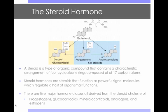To begin, I'd like to share a brief overview of what a steroid is and also what a steroid hormone is. A steroid is a type of organic compound that contains a characteristic arrangement of four cycloalkane rings, as seen in this compound, and is composed of 17 carbon atoms.